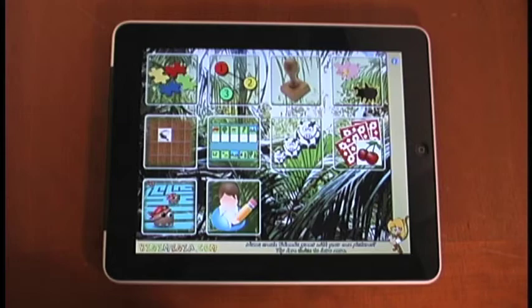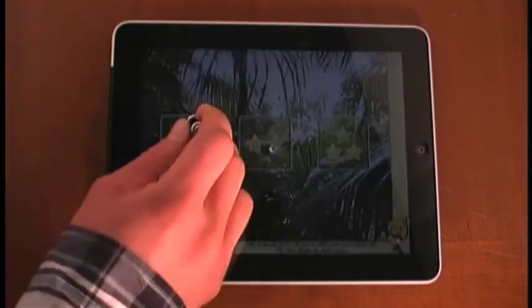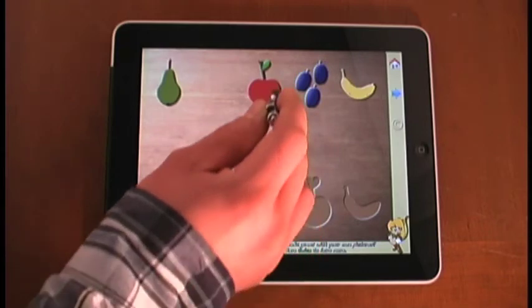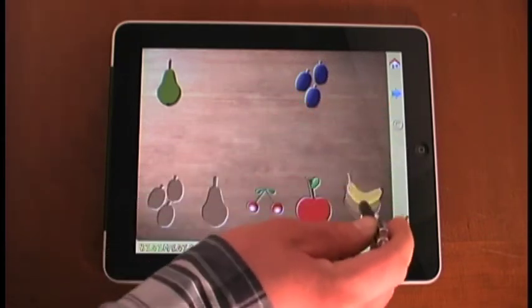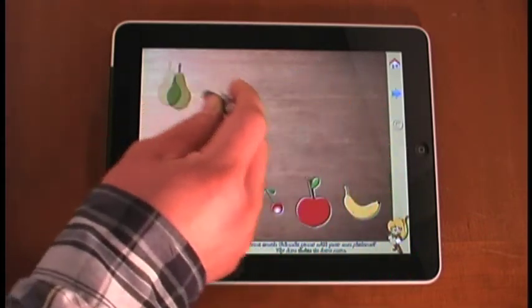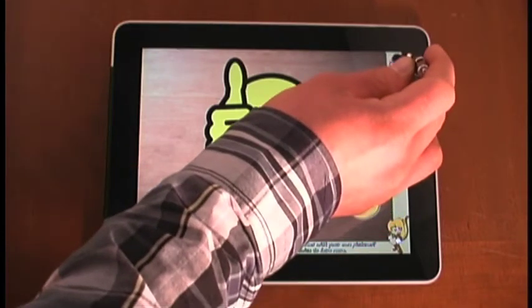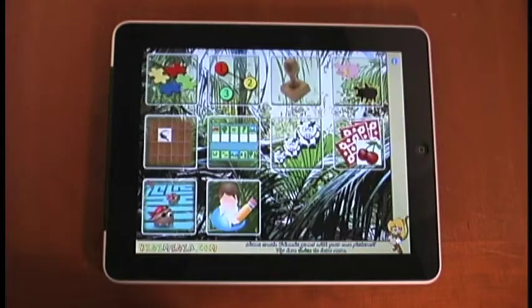Moving right along, our next game is matching the picture to the shape. So let's check it out. Try to match the pictures to the shades. So it looks like we have some fruit here. Drag them down. So let's see what kind of reward we get this time. Wow! Great job! Thumbs up. You never know what you're going to get with this game as far as positive reinforcement, but it's always a nice surprise.